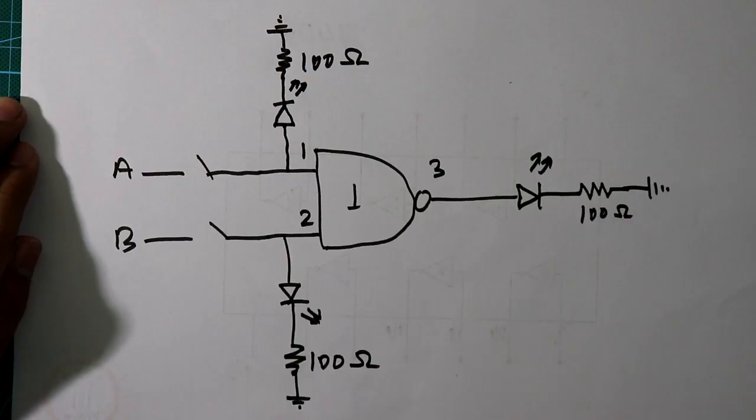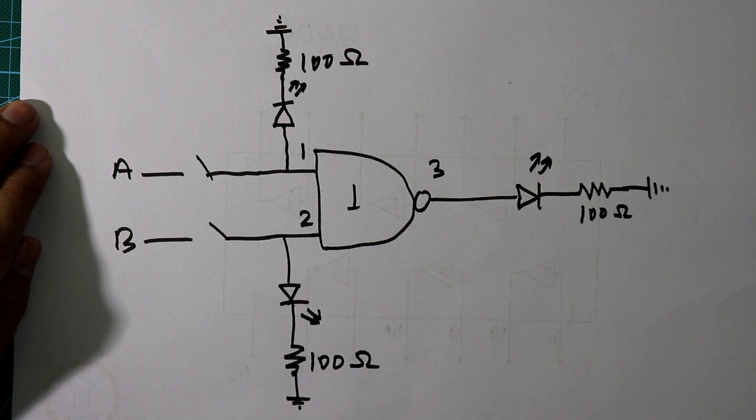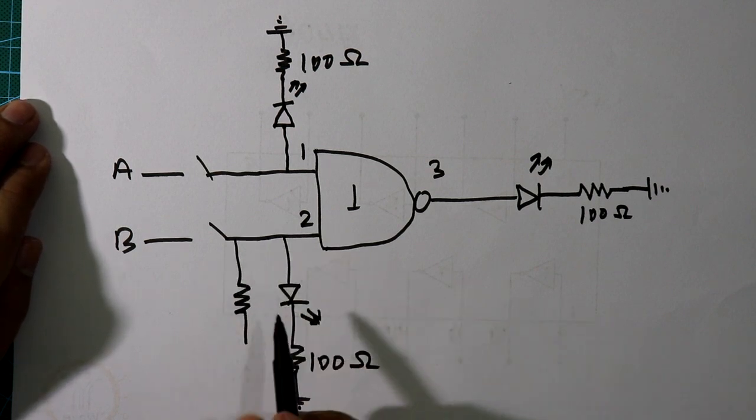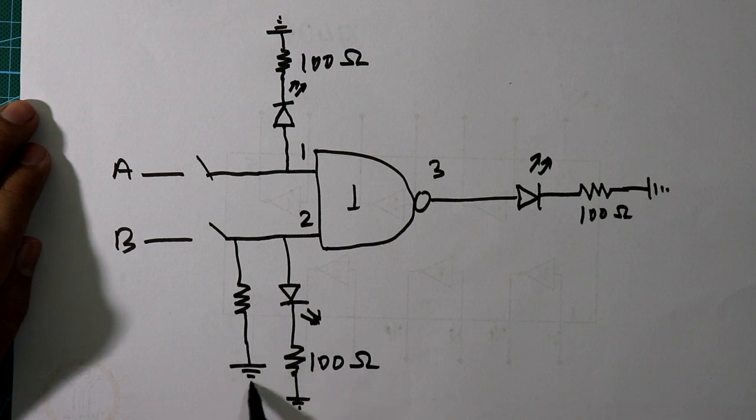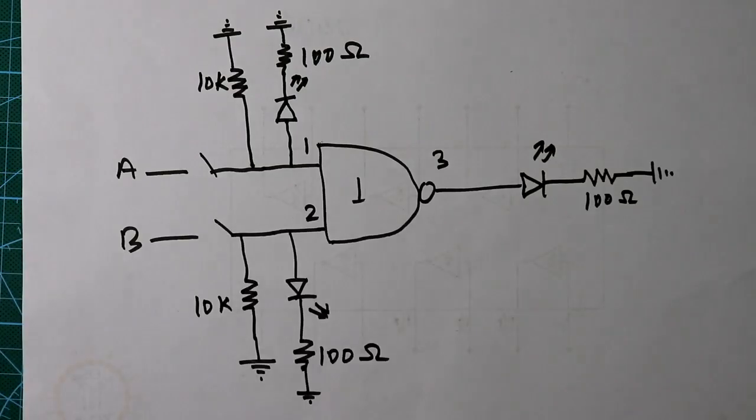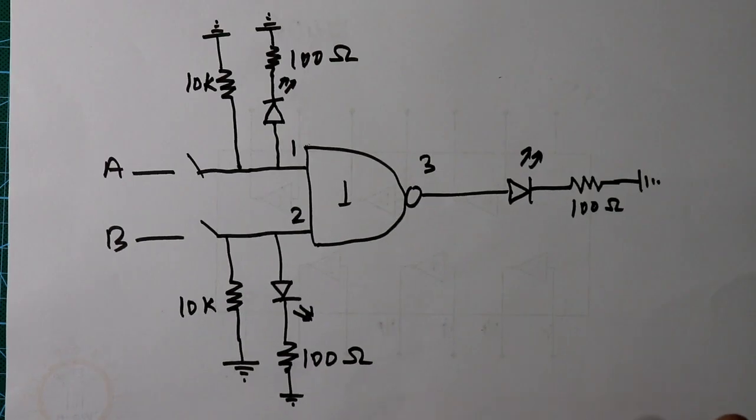Here also 100 ohms. Sometimes this type of IC makes some error, so to remove the error we have to connect one resistor with the input pin, and connect it to the ground. It is called pull down resistor and the value will be 10 kilo ohms for this input also. Now our circuit is completed, let's connect this on the breadboard.